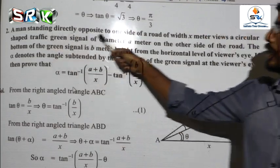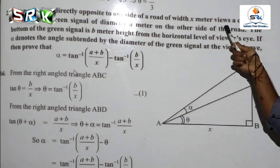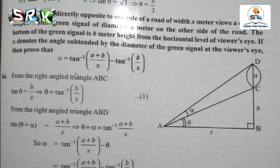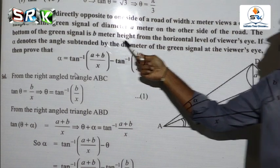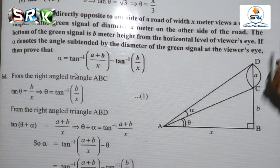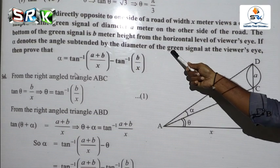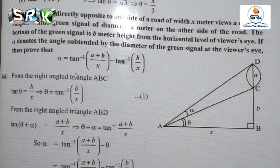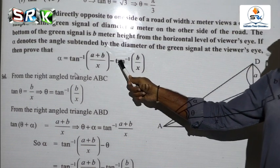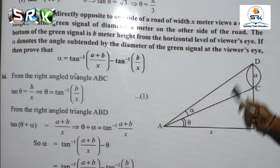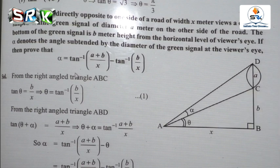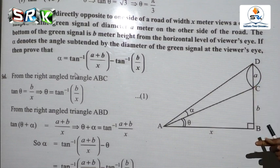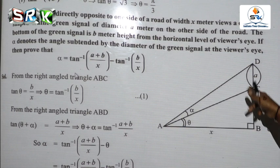Second question: A man standing directly opposite one side of a road of width x metres views a circular traffic green signal of diameter a metres on the other side. The bottom of the green signal is b metres height from the horizontal level of the viewer's eyes. If alpha denotes the angle subtended by the diameter of the green signal at the viewer's eye, prove that alpha = tan⁻¹((a+b)/x) − tan⁻¹(b/x).